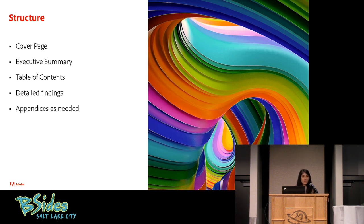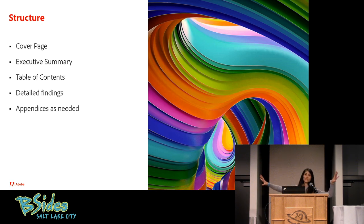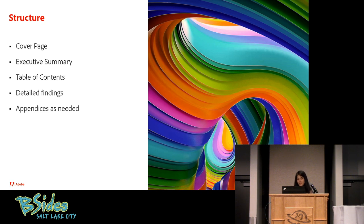One more comment about structure: one particular style drives me crazy — when your summary is big. If you've got three pages of summary, that's not a summary. All of a sudden, half the details of a finding are in the summary and the other half are later in the report, and that's messy to jump back and forth. Give me a succinct summary and then I can go find all the details together in the findings section.